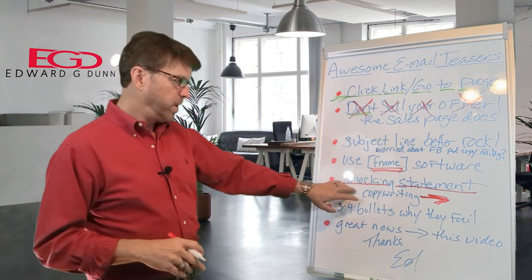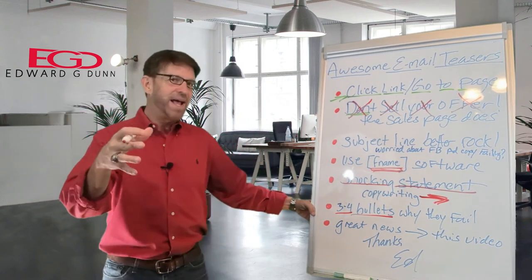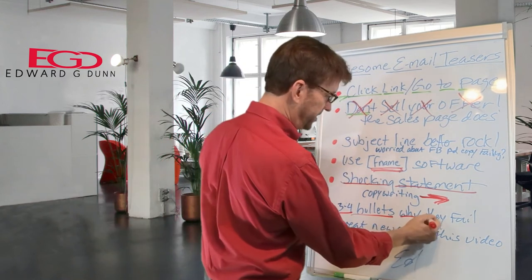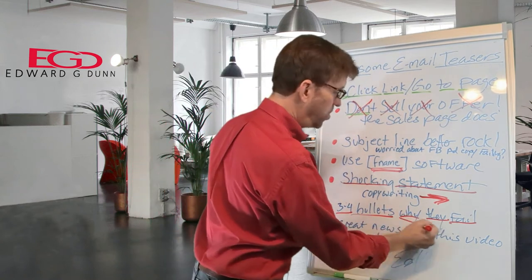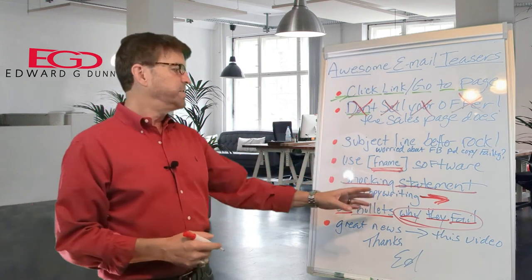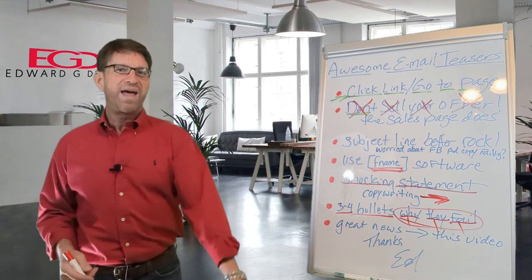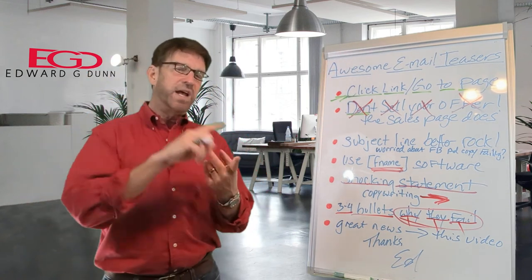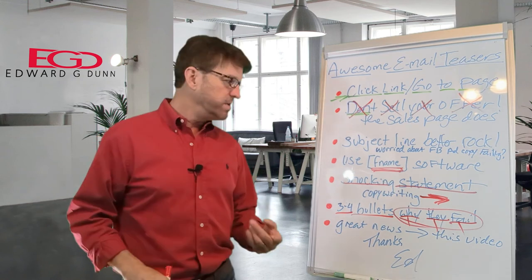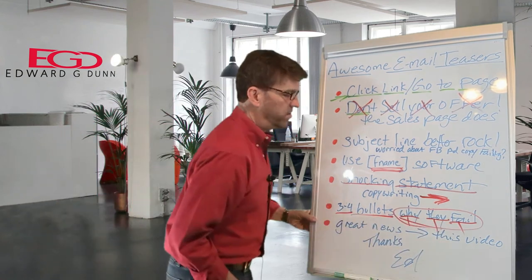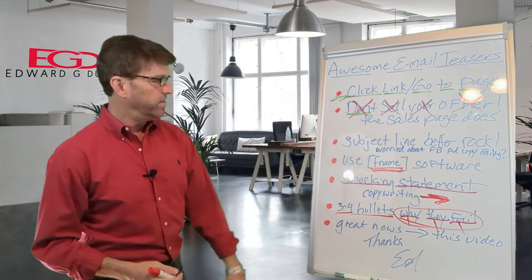This is all spelled out in the worksheet. Next, you want three to four of your best bullets. By this point you should have an arsenal of great bullets from the training. Sometimes I'll use ones I've developed before, but sometimes I'll go to why they fail. So if 90-plus percent of all sales copy has failed to convert customers, here are three reasons why: they fail because they use terrible headlines; they fail because they don't speak to the conversation going on in the heads of their customers. There's a whole list of things — this whole course is about why copy can fail and how to fix it.